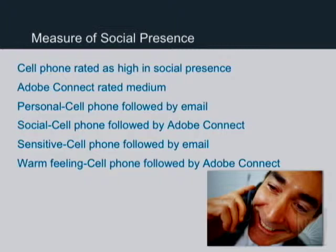I did a semantic differential to measure social presence in Adobe Connect. If the technology is considered personal, social, sensitive, or gives a warm feeling, it has more social presence. Students rated the cell phone as highest in social presence — interesting because you can't see the other person. Adobe Connect was rated medium on the scale. For being personal, the cell phone was followed by email. For social, the cell phone was followed by Adobe Connect. For sensitivity, cell phone was followed by email. For warm feeling, cell phone was followed by Adobe Connect. Students here really love their cell phones.